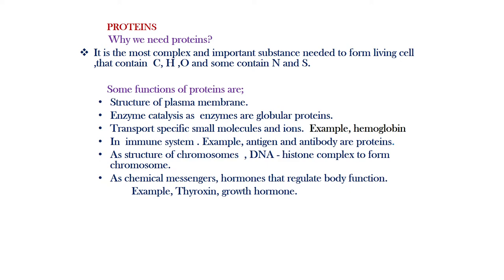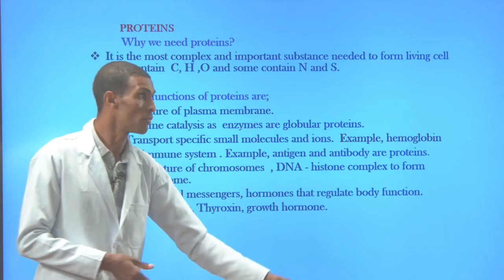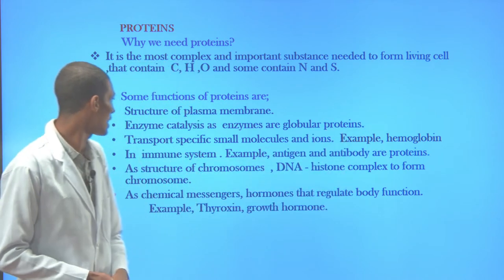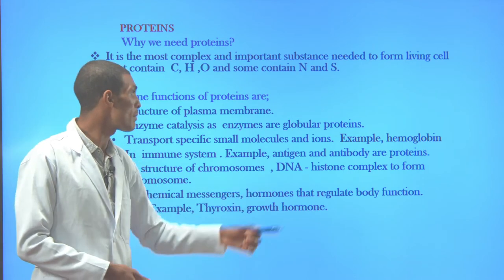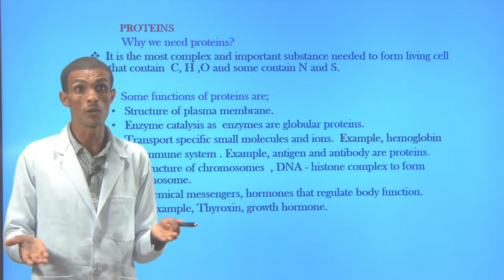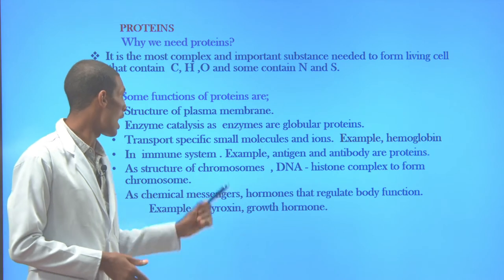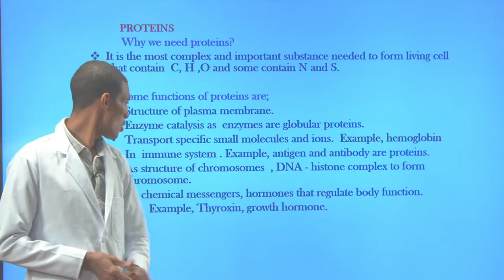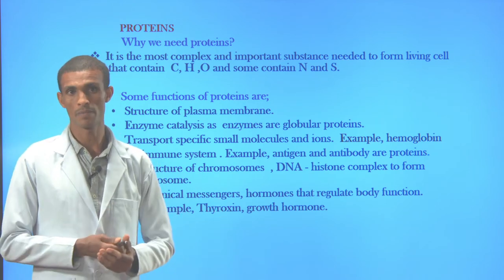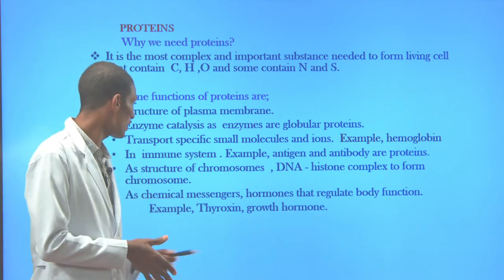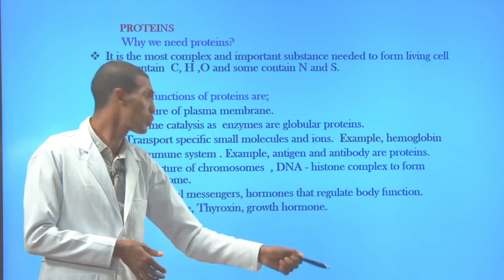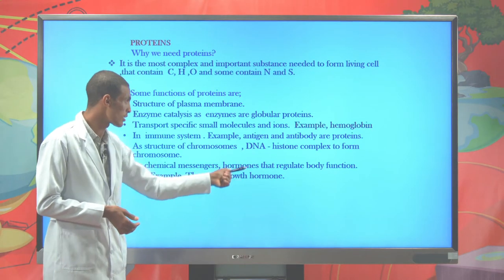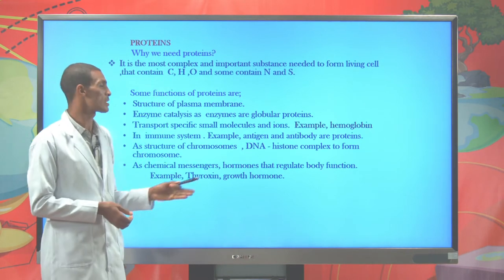Protein is important in the transportation of materials; for example, hemoglobin transports oxygen through the blood. In the immune system, antibodies recognize and bind specific antigens — both are proteins. Protein is also an important part of chromosomes, where DNA and histone proteins complex together. Protein also serves as chemical messenger molecules — hormones such as neurotransmitters are proteins that transmit messages. So protein is very complex and has diverse functions for life.